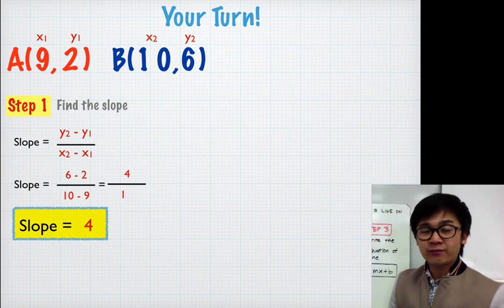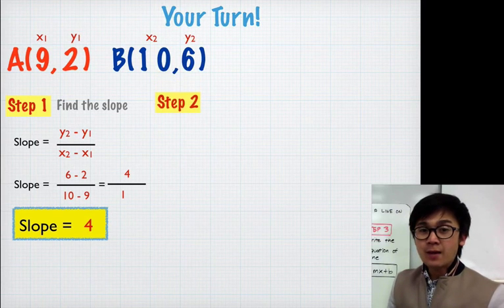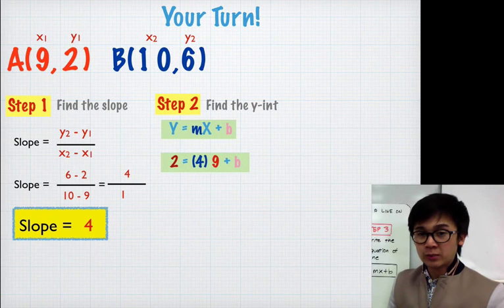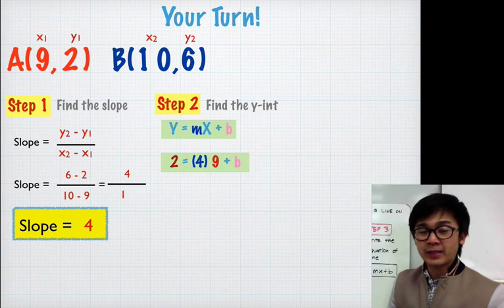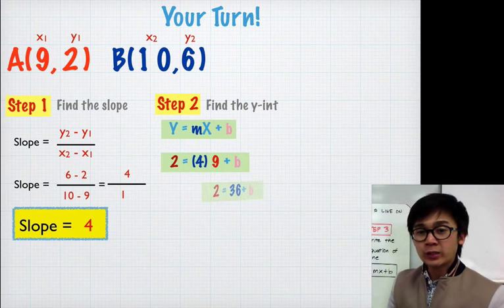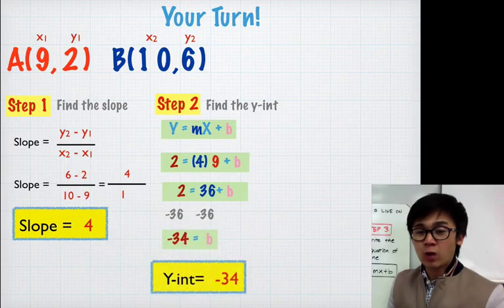Now that we have our slope, we find our y-intercept by using one of the points. I'm going to use point (9, 2). Using the slope-intercept form, I replace y, m, and x to solve for b. Simplifying the equation gives me b = −34, and that will be my y-intercept.